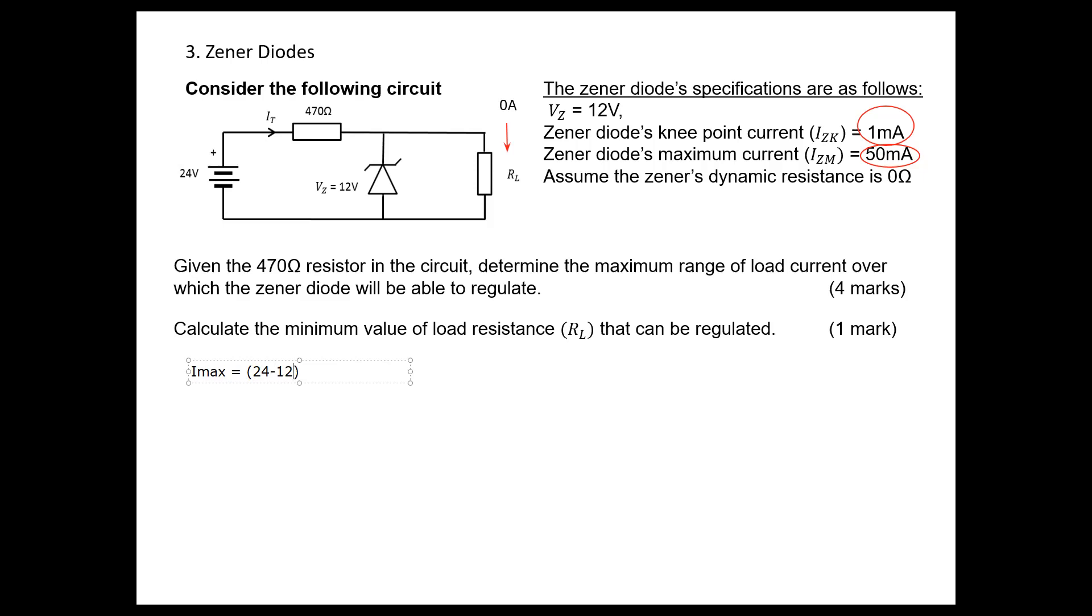At this point it is 12 volts. Because of that, the voltage across the resistor should be 12 volts. So what will be the current through this? If you divide this by 470, you are getting this figure.